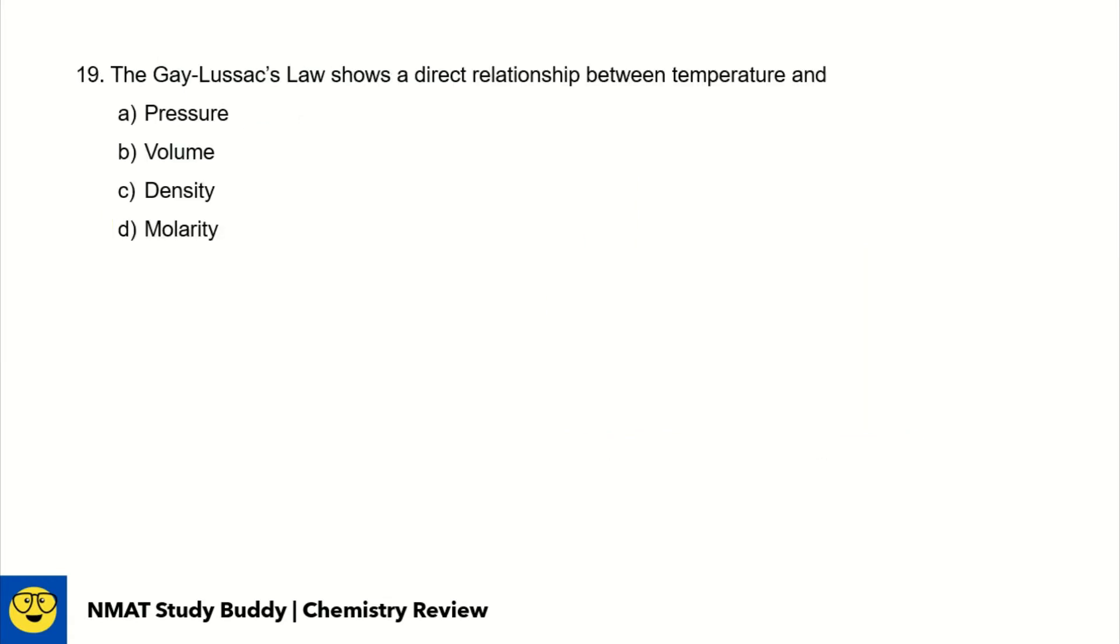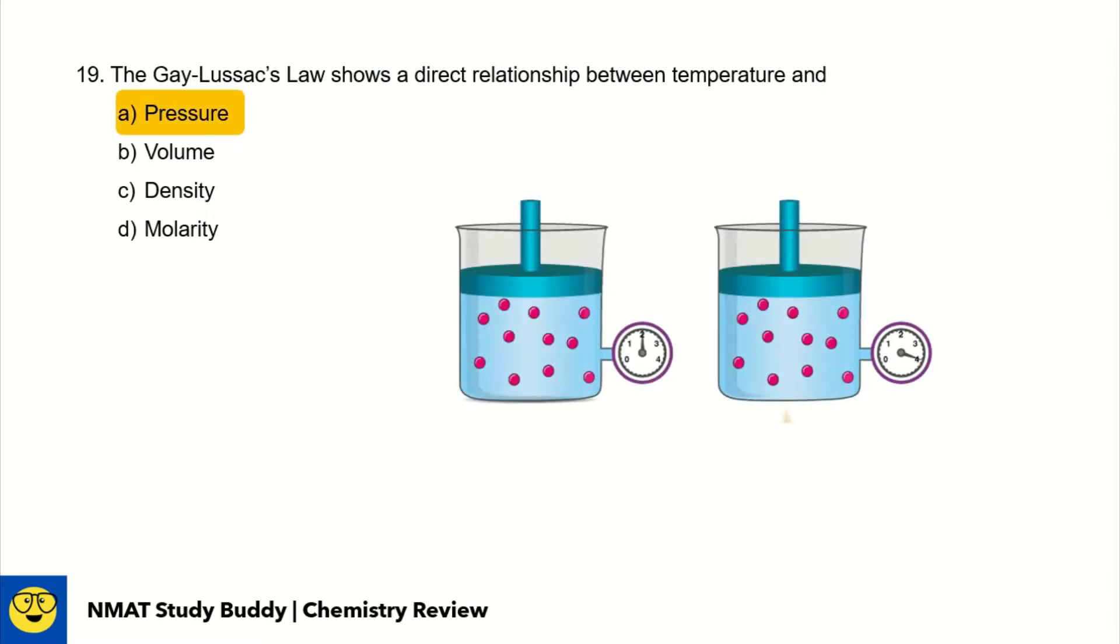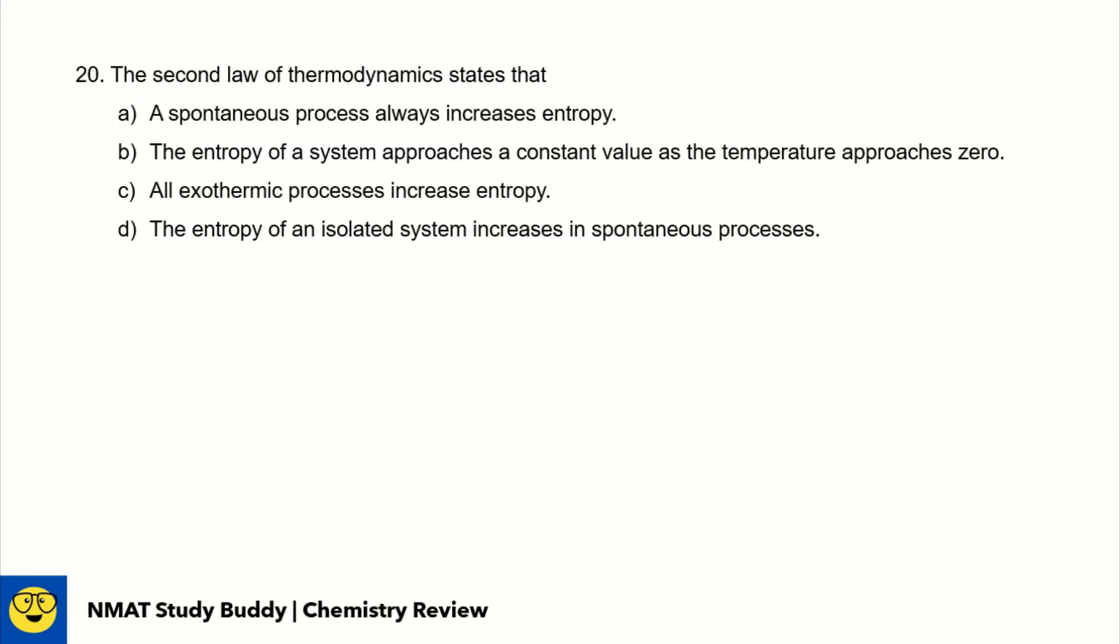Number 17, Charles law is expressed by letter B: V1 over T1 equals V2 over T2. Charles law states that the volume and temperature of a gas are directly proportional. When temperature increases or the surroundings heat up, the volume increases. Number 18, Boyle's law is expressed by letter C: P1V1 equals P2V2. Boyle's law states that when we increase pressure or compress the gas, the volume decreases. Number 19, Gay-Lussac law shows a direct relationship between temperature and pressure. Looking at these two cases, both have gases with the same amount and same volume. The containers have the same volume. On the right, the temperature is increased. When we increase temperature, we introduce more energy to the gas particles. When the energy increases, the kinetic energy increases, making collisions with the walls more frequent. So the container feels more pressure when temperature is higher.